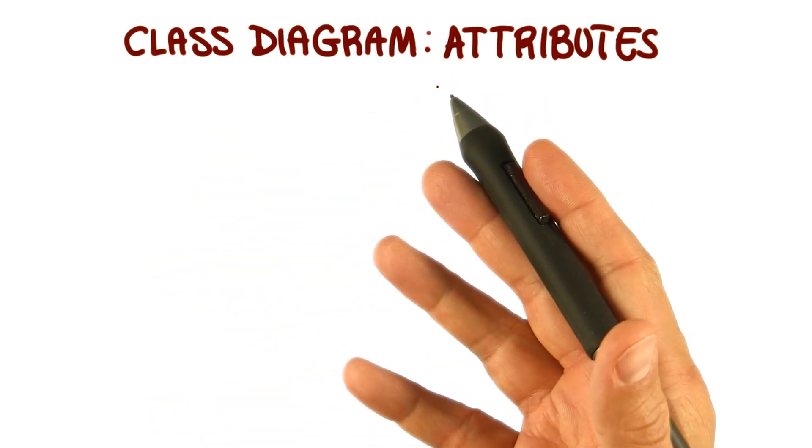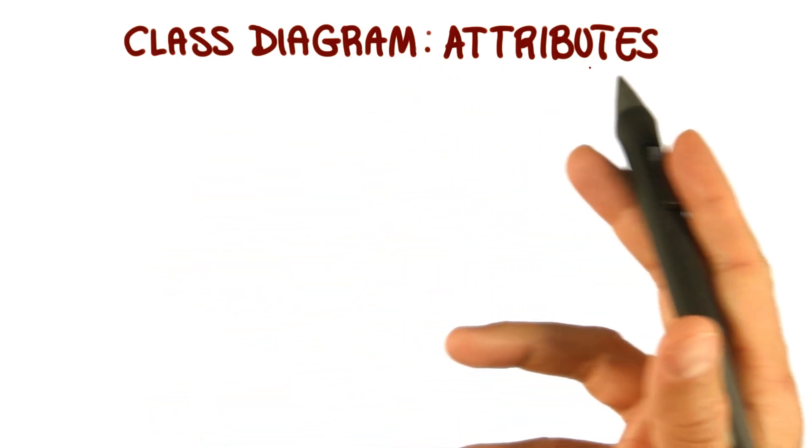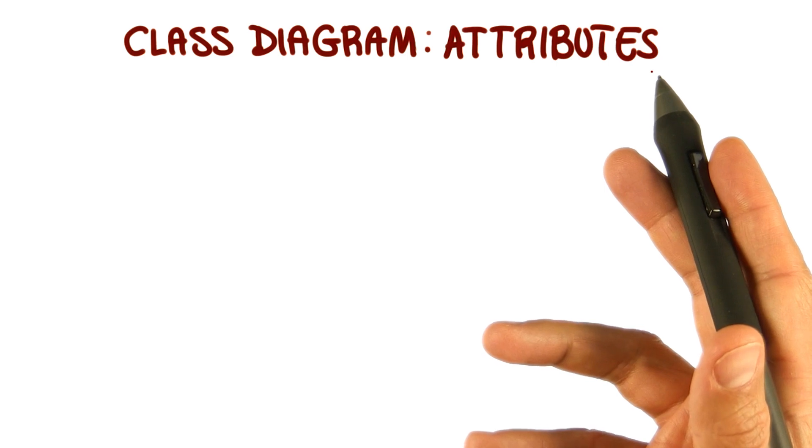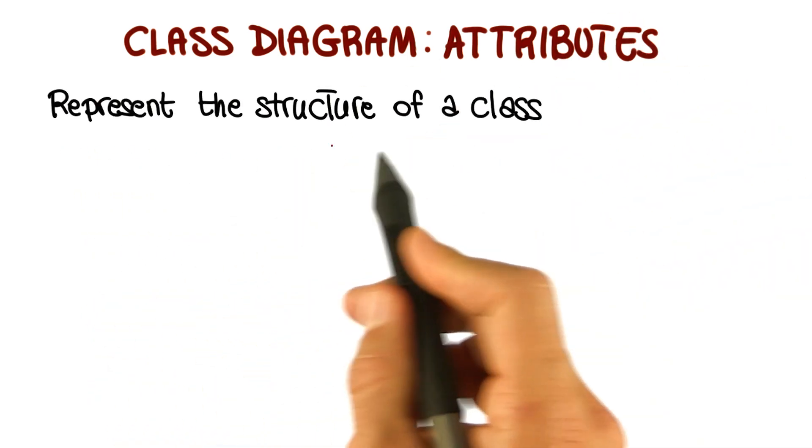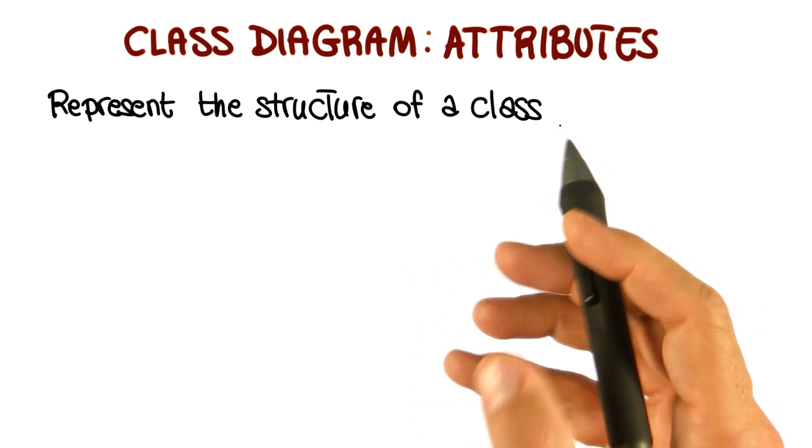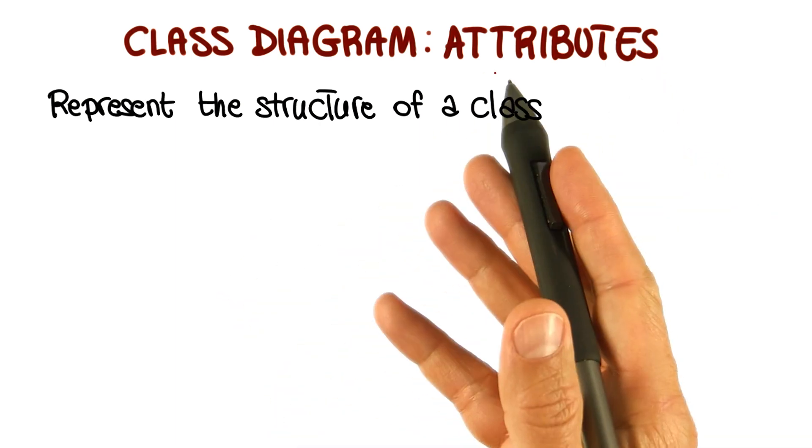Now that we've identified the classes in my system, let's see how we can identify the attributes for these classes. First of all, let's recall what attributes are. Attributes represent the structure of a class, the individual data items that compose the state of the class.